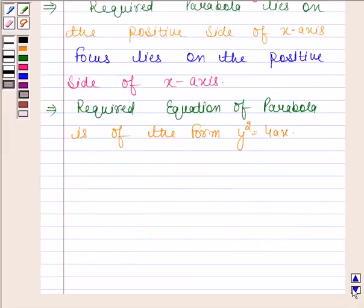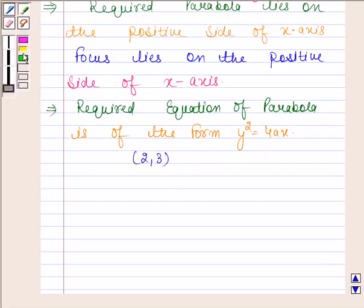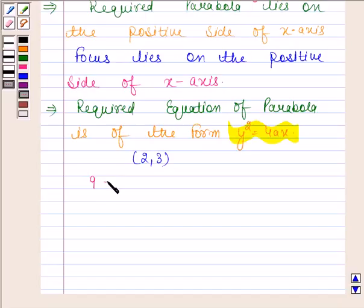Now, the required parabola is passing through the point (2,3). So we will put x as 2 and y as 3 in this equation. By substituting these values, we get 9=8a. This implies a=9/8.